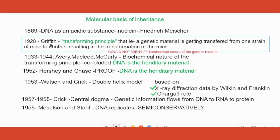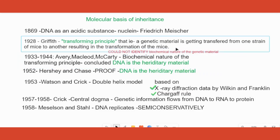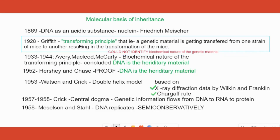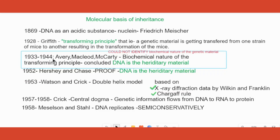Griffith did a set of experiments on mice and proved that there is something getting transferred from one organism to another, resulting in a change in the genetic material. He called that the transforming principle. At that time he did not identify its biochemical nature. Then from 1933 to 1944 — ten years of research — Avery, MacLeod, and McCarty understood that it is DNA itself that is the genetic or hereditary material.